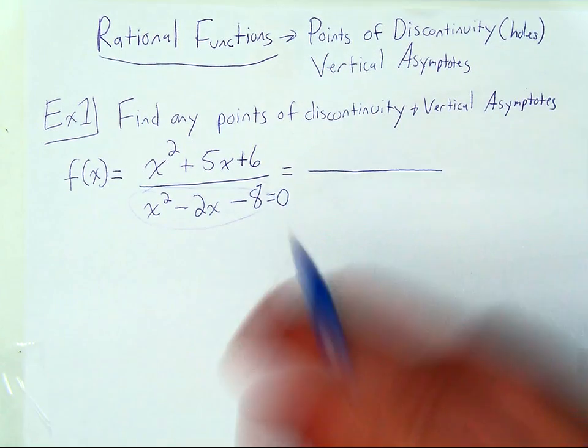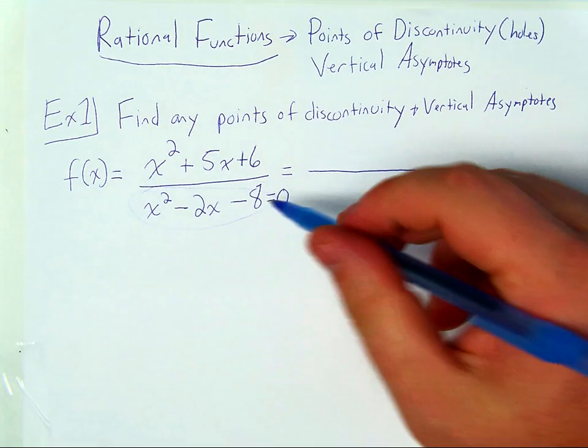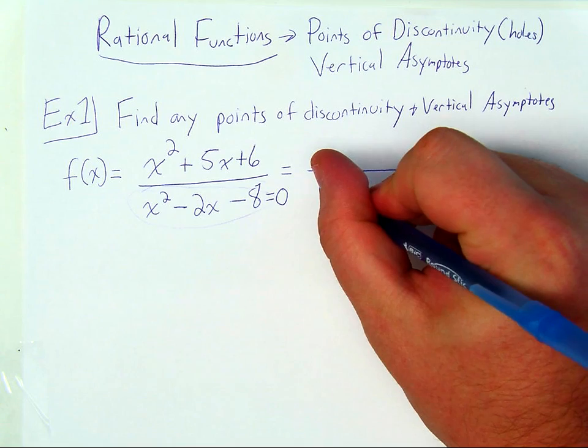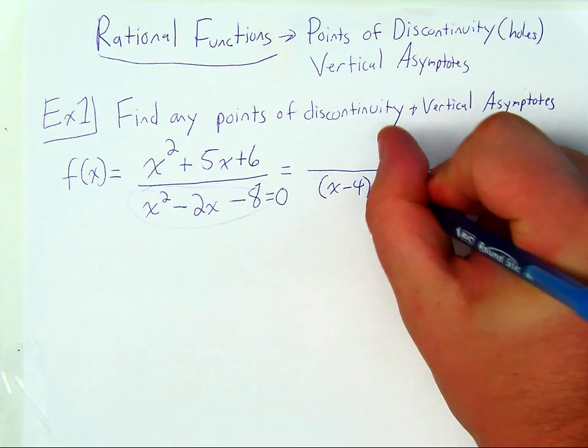To do that here, since it's quadratic, let's factor this denominator. So what are two factors of negative eight that add to negative two? Negative four and positive two.